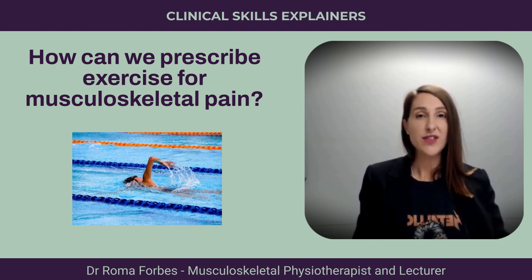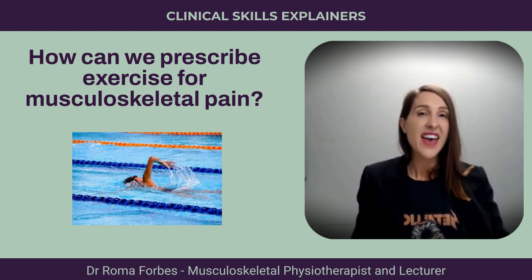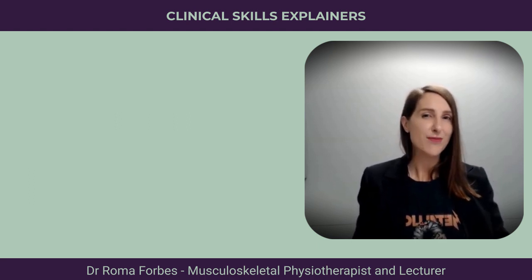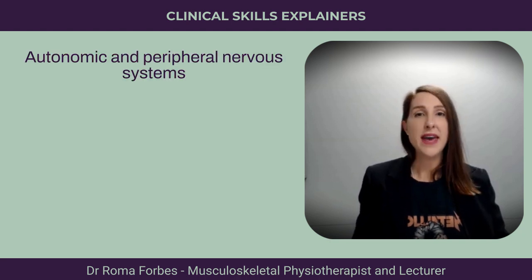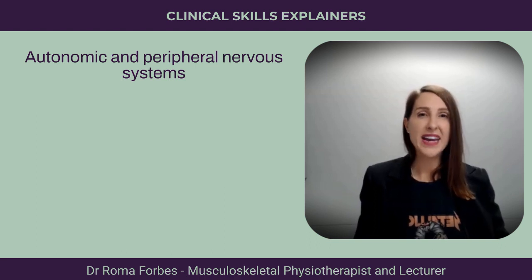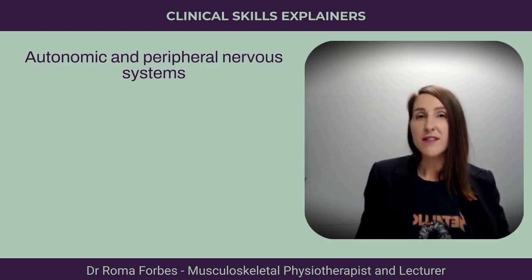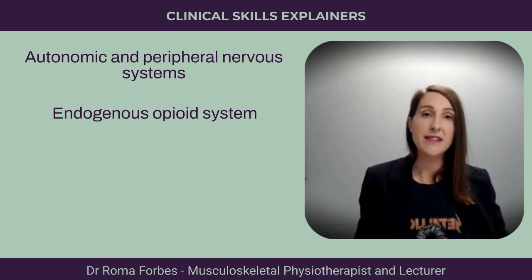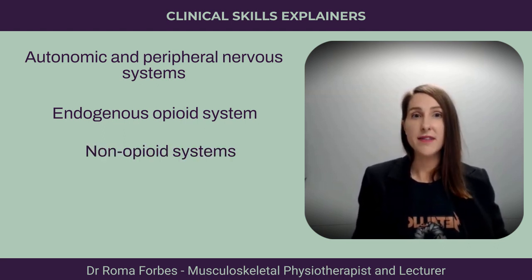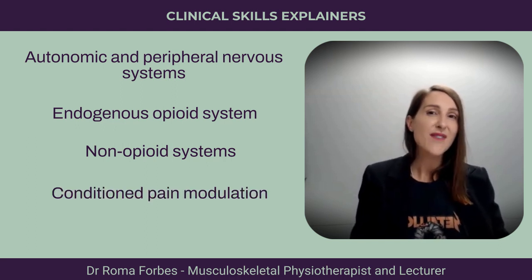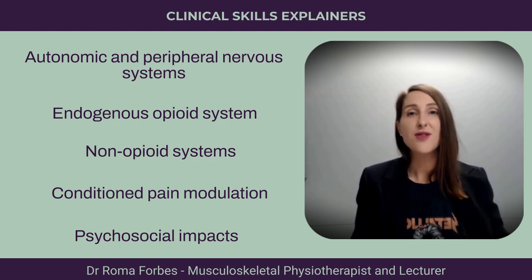There are so many ways in which exercise can be used for pain, outside the changes we see to the musculoskeletal system. Exercise has a big impact on the autonomic and peripheral nervous system, which can directly modify pain and the pain experience. Firstly, we have the endogenous opioid system, which impacts the threshold of nociception centrally and peripherally. We then have non-opioid systems that can either increase or decrease synapse excitability, and we have conditioned pain modulation through descending inhibition.